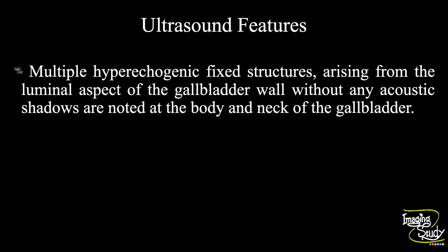So in summary, multiple hyperechogenic fixed structures arising from the luminal aspect of the gallbladder wall without any acoustic shadows are noted at the body and neck region of the gallbladder, suggesting gallbladder polyps.